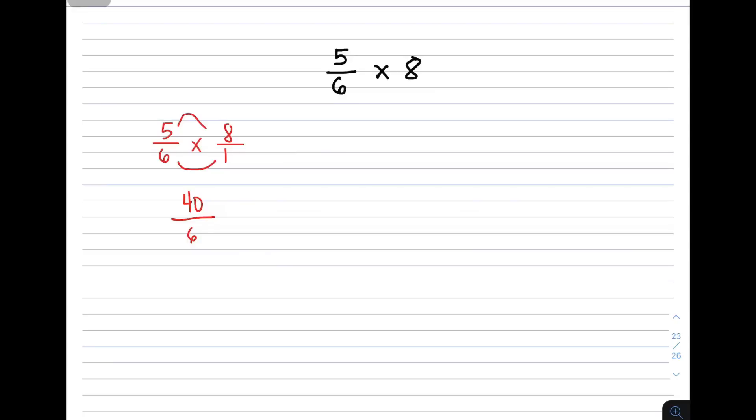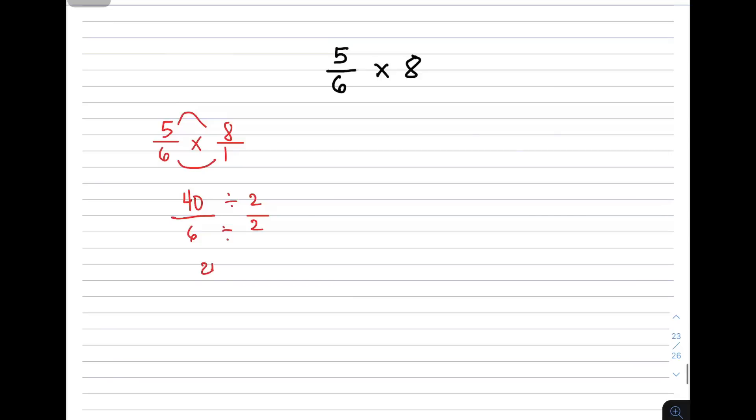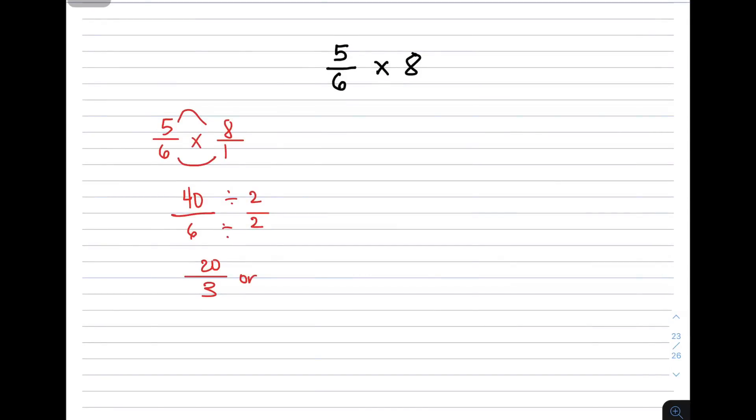Simplifying these numbers, the greatest common factor is 2. Dividing numerator and denominator by 2 gives 20 over 3. Some teachers or references accept mixed numbers instead of improper fractions. Converting: 20 divided by 3 is 6 remainder 2, so the mixed number is 6 and 2 thirds. Either 20 over 3 or 6 and 2 thirds is acceptable.